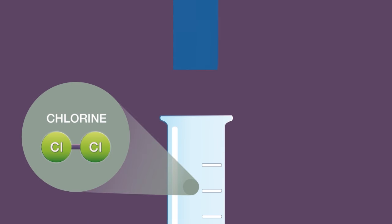Chlorine turns damp blue litmus paper red and eventually bleaches it to white.